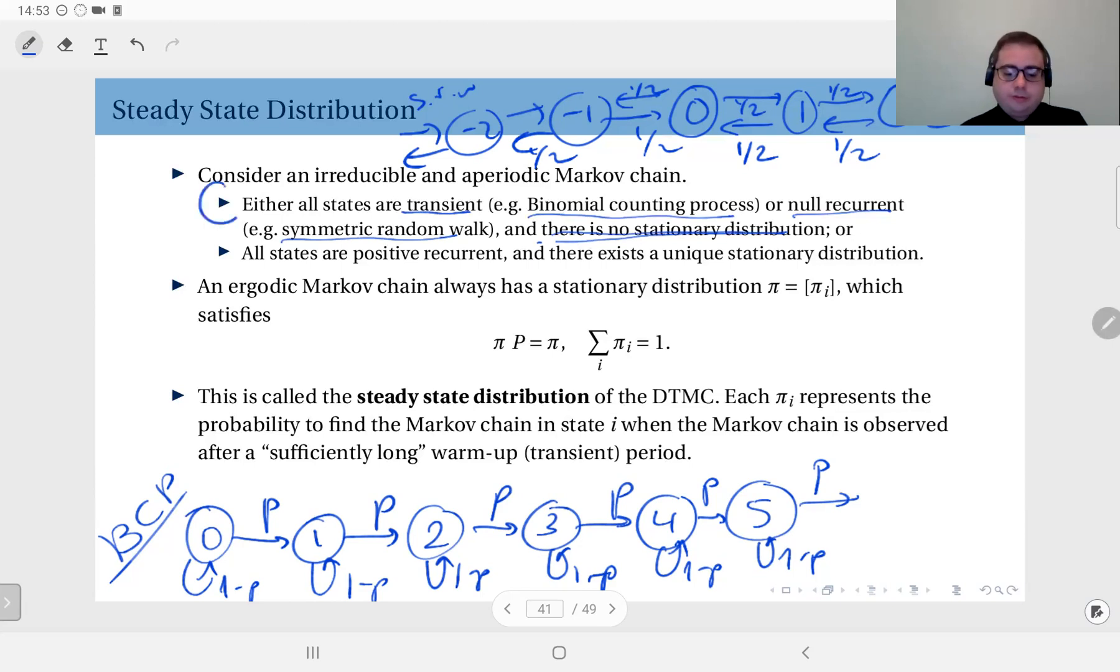So that is one situation when you have an irreducible and aperiodic Markov chain. Either all states are transient or all states are null recurrent, or the second scenario is all states are positive recurrent, in which case there is a unique stationary distribution.